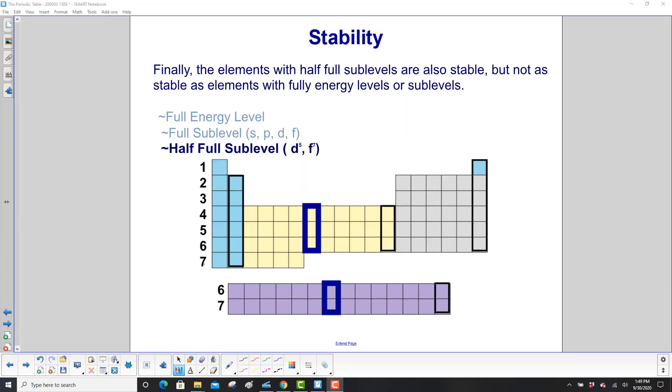Finally, the elements with half full sublevels are also stable, but not as stable as elements with full energy levels or sublevels. That would be like D5, because the D subshell has 10 electrons possibly, so 5 would make it somewhat stable. And F, that of course has 14, so if it has 7, it's half full.